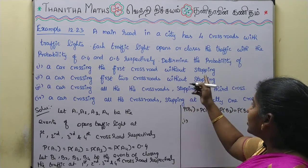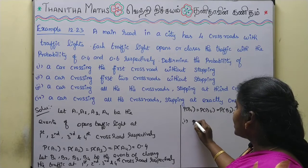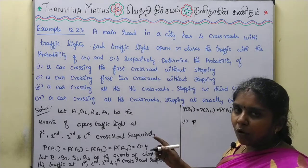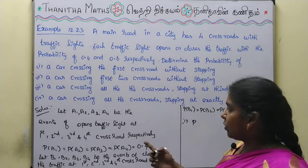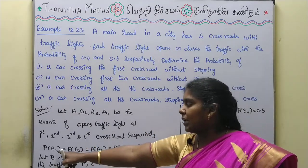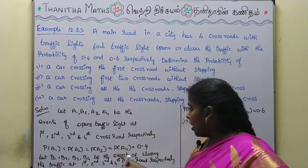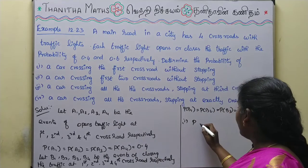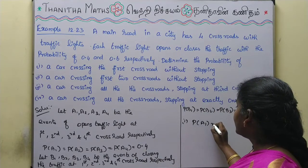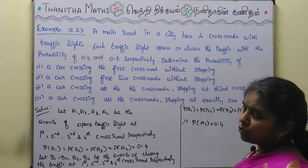For the 1st question — a car crossing the first crossroad without stopping — the traffic light must be open. So the probability is P(A1) = 0.4.